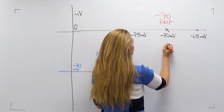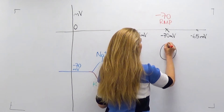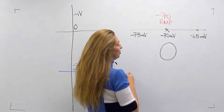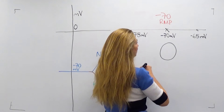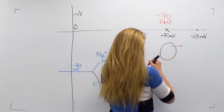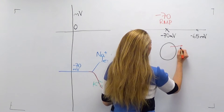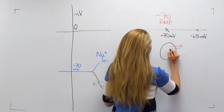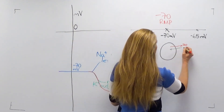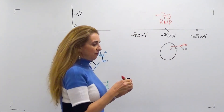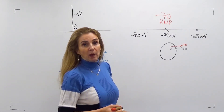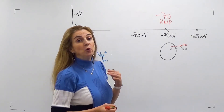If chloride channels open when the equilibrium potential equals minus 70, the resting membrane potential pushes chloride outward and the concentration difference pushes chloride inward — each with a force of 70. They cancel each other, so there is no net movement of chloride and nothing happens.